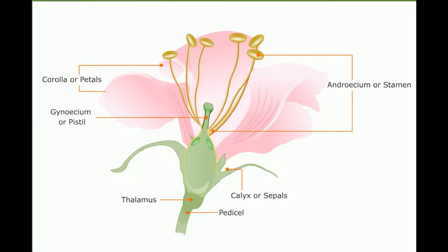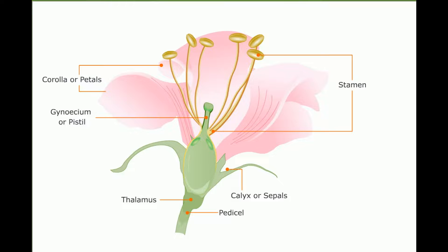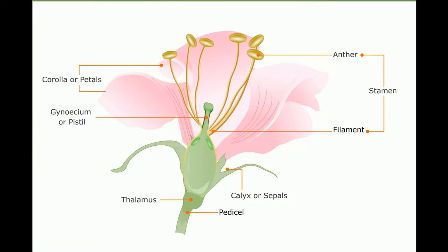The uppermost part of the pedicel is swollen — this is called the thalamus. The stamen, which is the male part of the plant, consists of the filament and a two-lobed head called the anther. The anther has pollen grains that take part in reproduction.